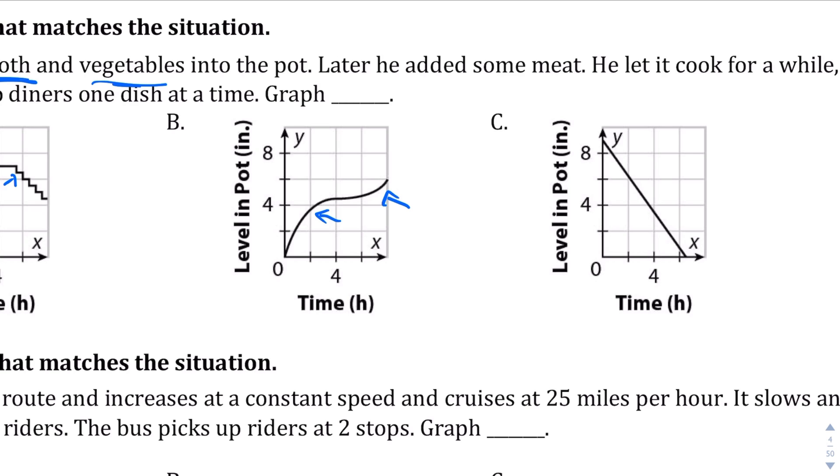It looks like, in fact, that the level in the pot is going up. And here in graph C, there's no part about this where the cook's putting broth and vegetables into the pot and then it leveling out before he adds some meat. So it's definitely not C either. So we're going to say graph A.